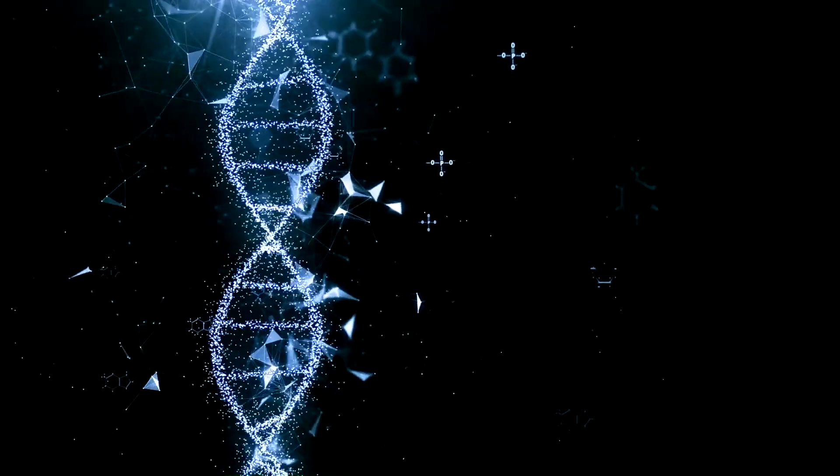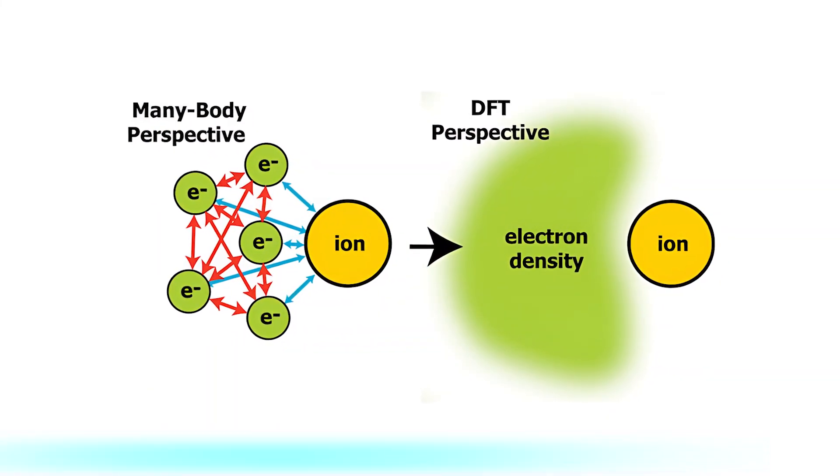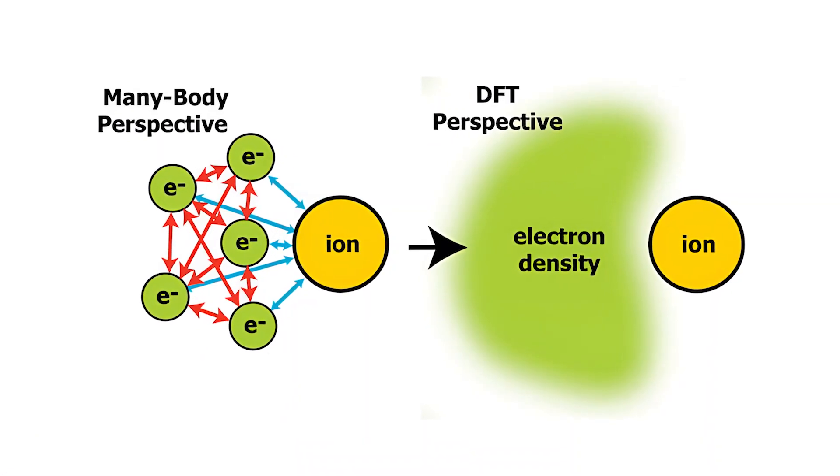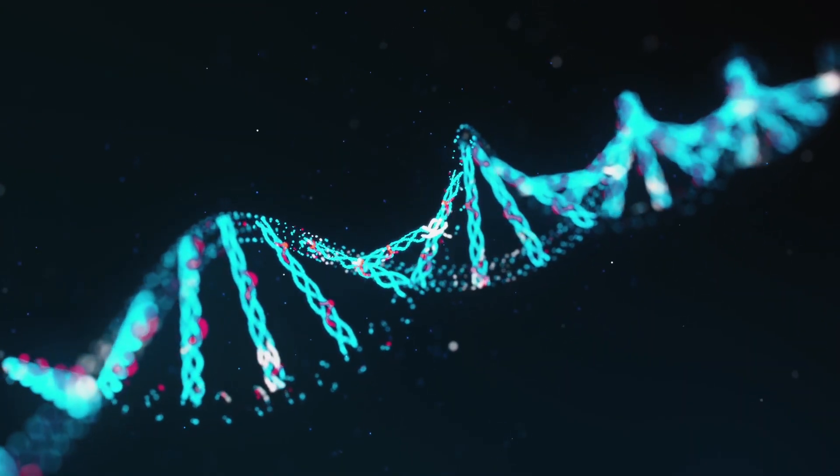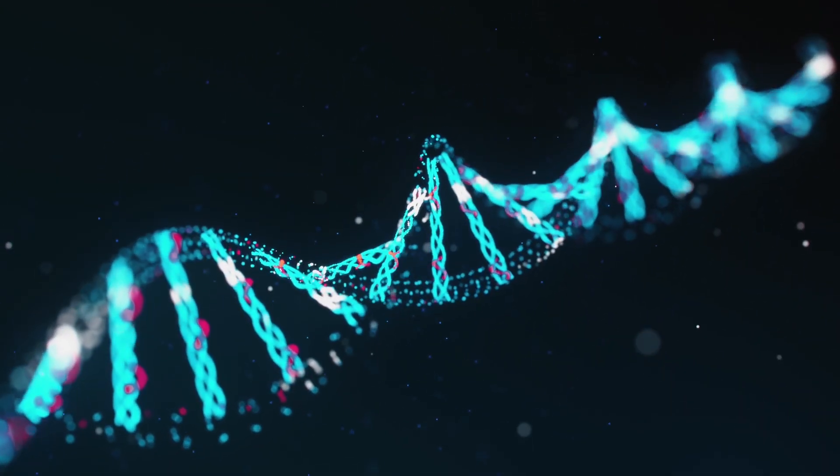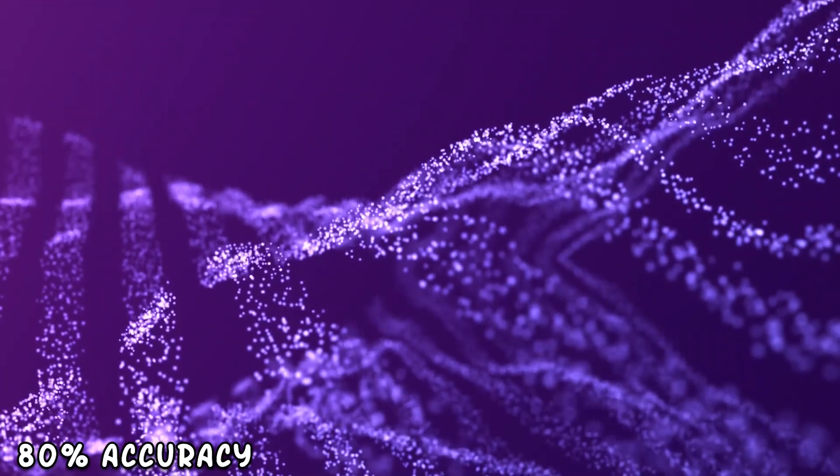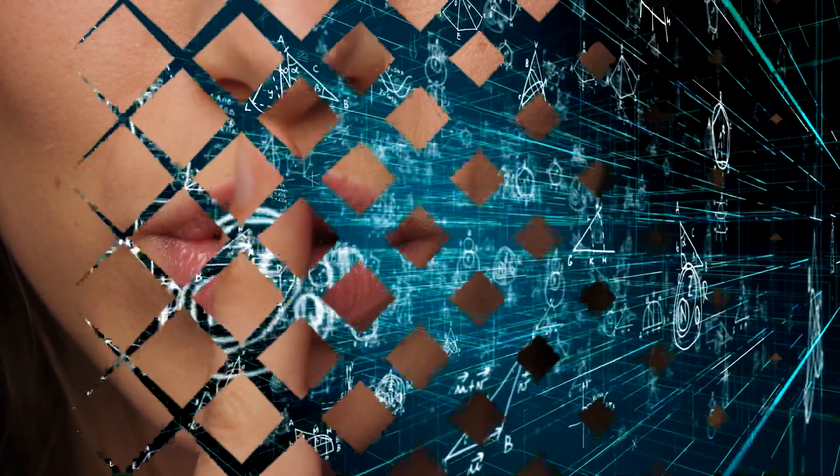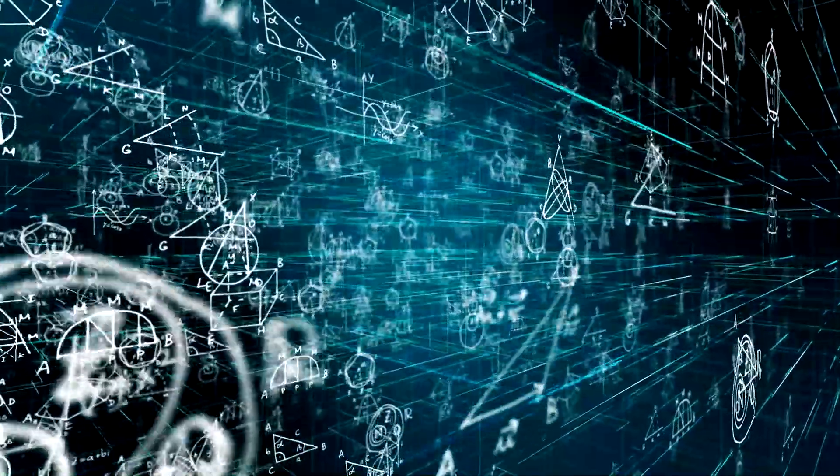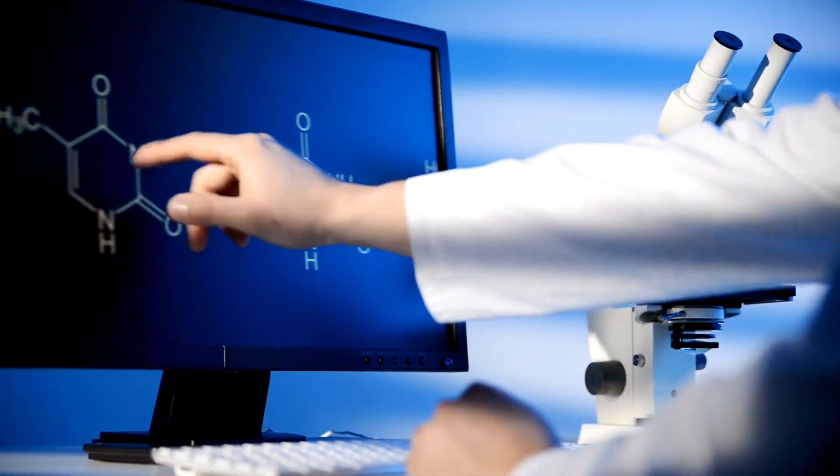GNOME grew strong because it kept getting better. It learned from new information, using density functional theory to check how stable things were. It kept changing, learning more and more, getting smarter each time. Started at 50%, but after all that, it jumped up to 80% accuracy. Its secret? Always improving, never stopping. Like a machine that never stopped growing, GNOME became super good at guessing things right. And it all came from always learning and changing, getting stronger step by step.